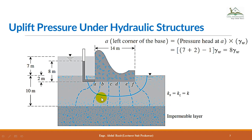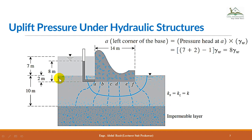Counting the potential drops: 1, 2, 3, 4, 5, 6, 7 — there are 7 potential drops. So the head loss per potential drop equals 7 / 7 = 1 m. Because the weir base is 2 m below the ground surface, the total head at the base level on the upstream side is 7 + 2 = 9 m. At point A, after one potential drop, the piezometric head equals 9 − 1 = 8 m.